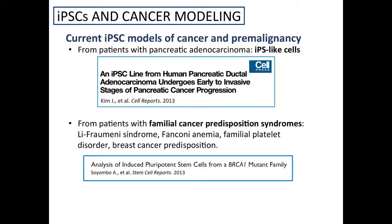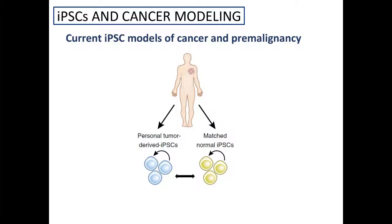However, in this approach the iPS cells are derived from normal cells instead of cancer cells. Actually, the best way to model cancer with iPS cells is by deriving them from both cancer cells and normal tissue. This way, you have paired tumor and normal iPS cells that share the same germline background — that is, they share germline but not somatic variants.